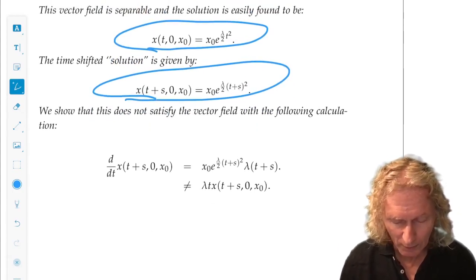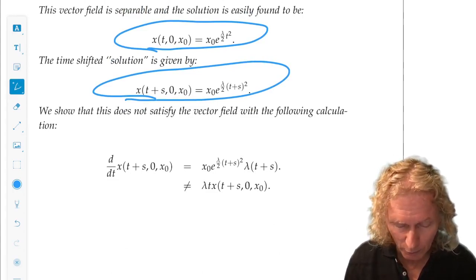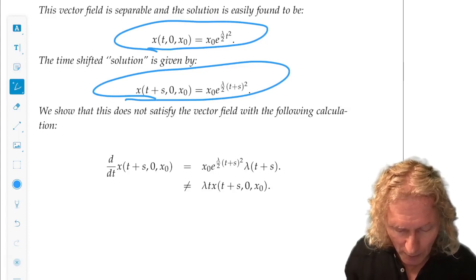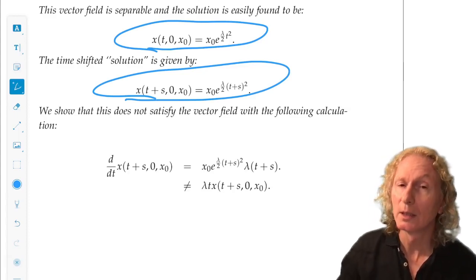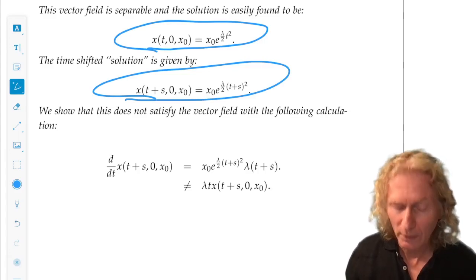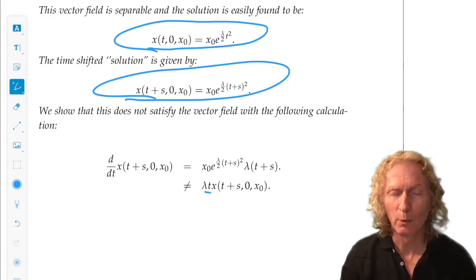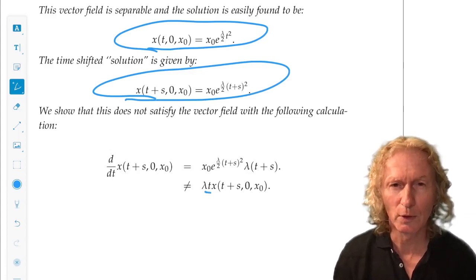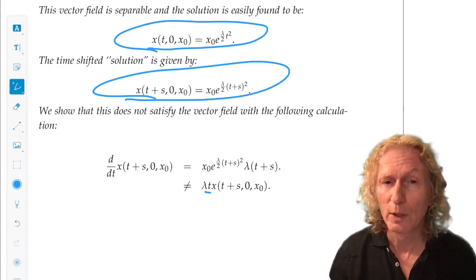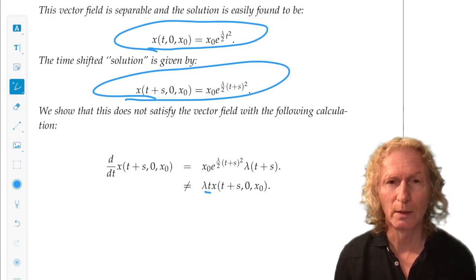And you can easily verify that the time derivative, d by dt, of that time shifted solution is not lambda t times the time shifted solution. This is the key for why non-autonomous systems don't work with the time shift property. We shift the solution, not the time-dependent vector field. That's the key point here.